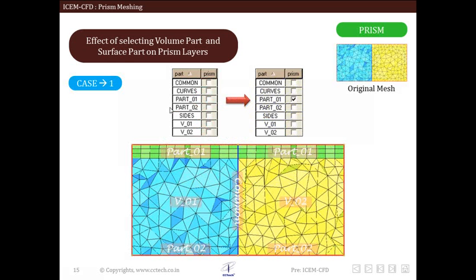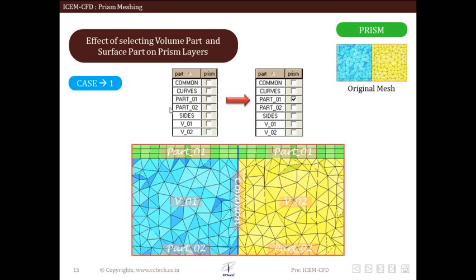In the first case, we create prisms only for Part 01 and do not select any volume part for prism creation. When no volume part is selected, it means all volume parts are selected. We observe that the prism layer is created for Part 01 and passes through both geometry parts, as no specific volume was selected.